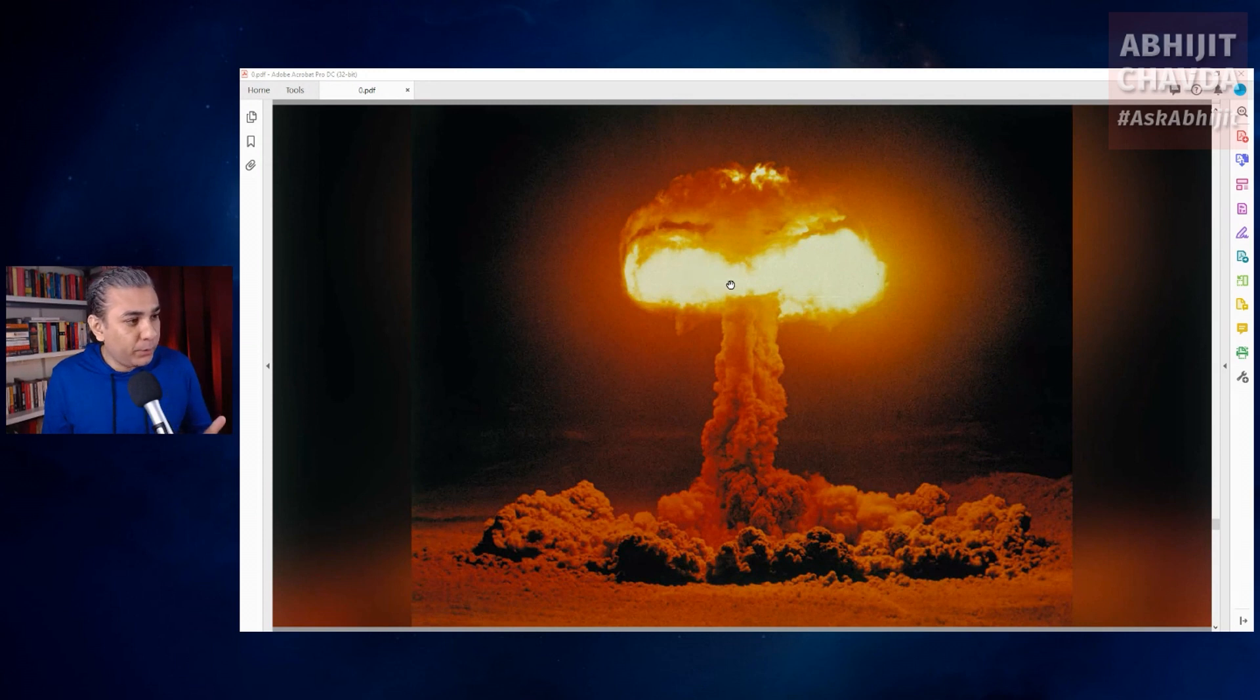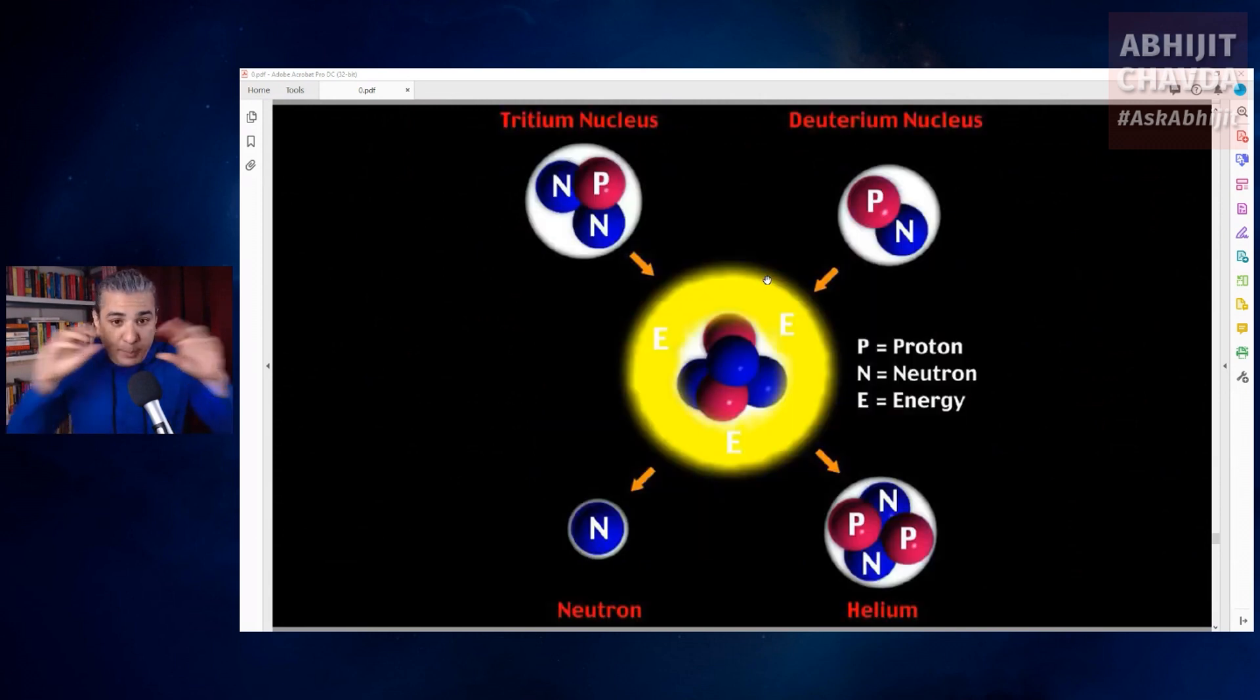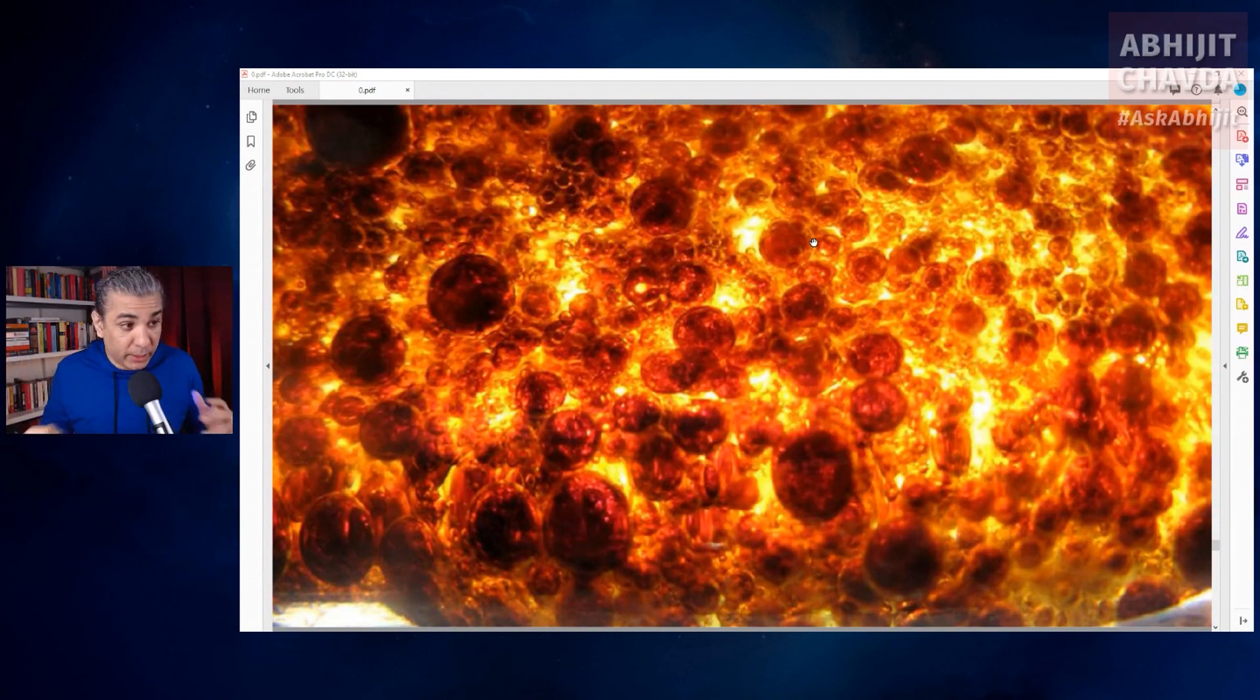There is another kind of nuclear reaction called nuclear fusion. Unlike fission where a nucleus is split, in fusion two atoms are brought together forcibly and they are squeezed together and they form a new atom. Fusion reactions give off enormous amounts of energy in the form of heat and radiation.